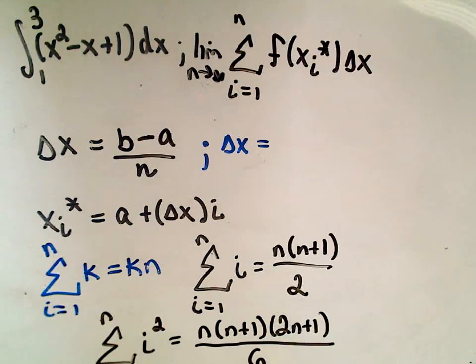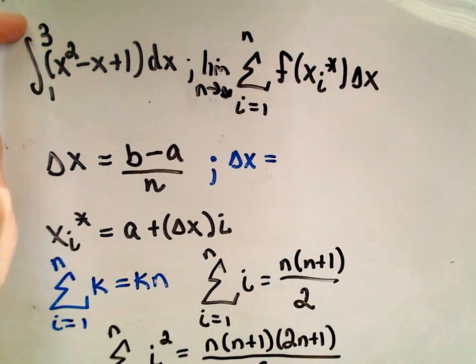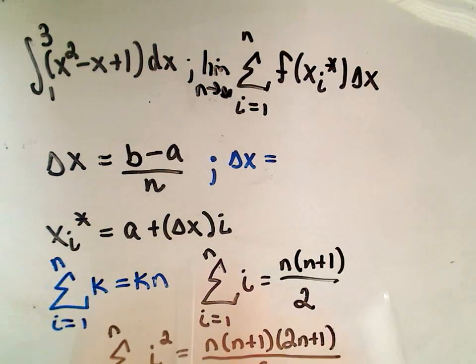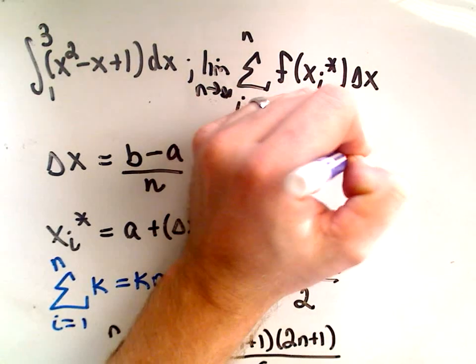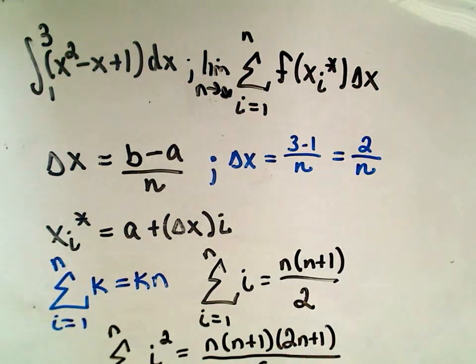In this case, we can calculate our delta x value. It's going to be the upper limit minus the lower limit. So that will give us 3 minus 1 over n, or the value 2 over n.